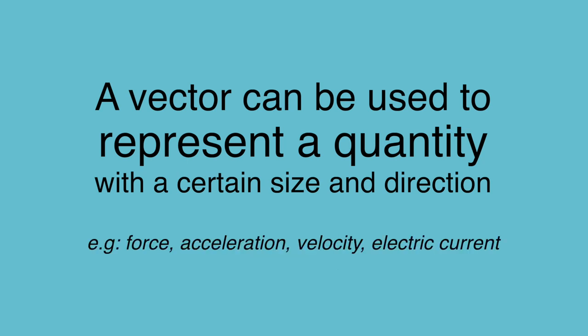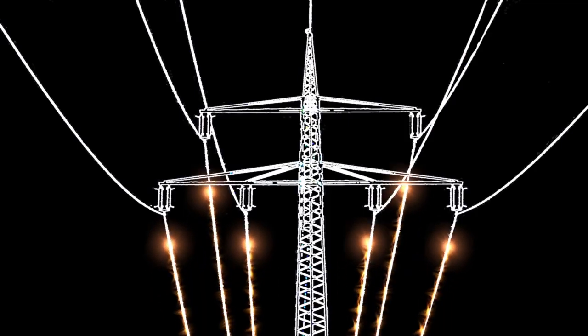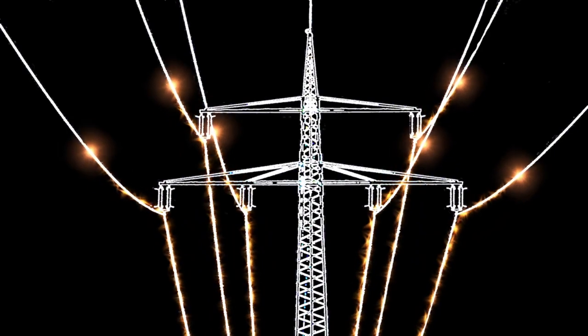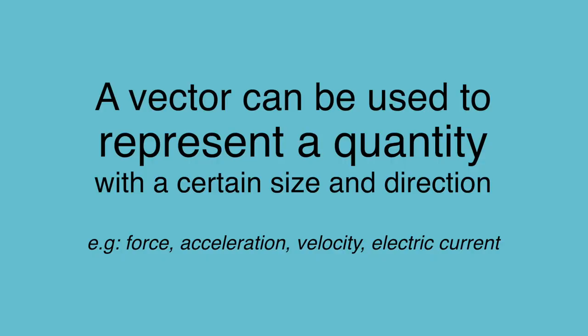It could be a force, such as the force of a well-placed punch, or it could represent the flow of electricity through a wire. These things have a certain size and act in a certain direction. Both size and direction are important qualities, and we can use a vector to represent both of them easily on paper.